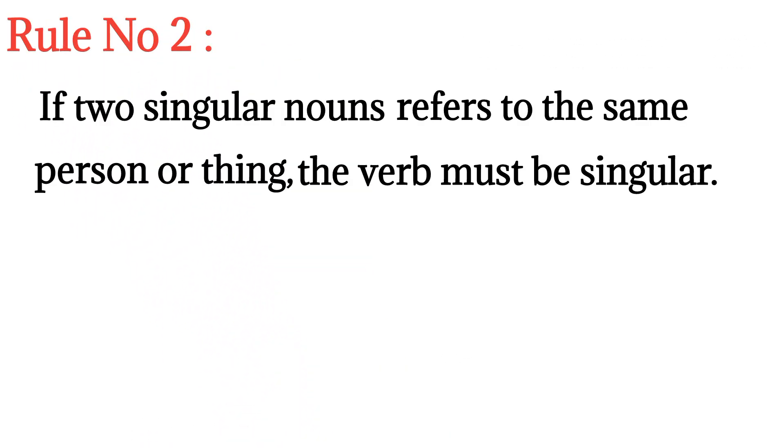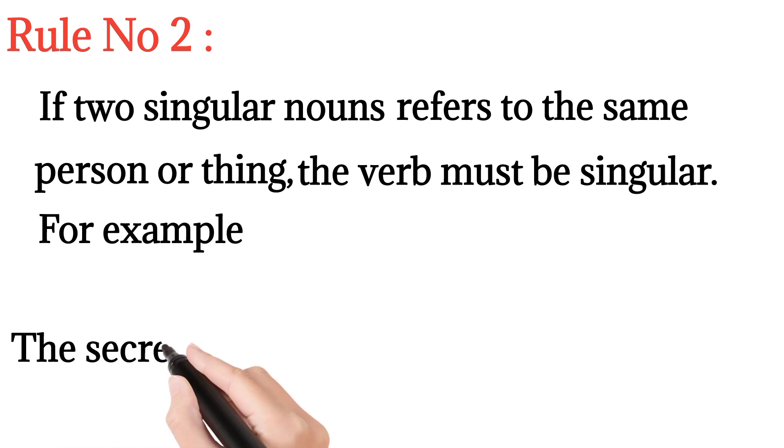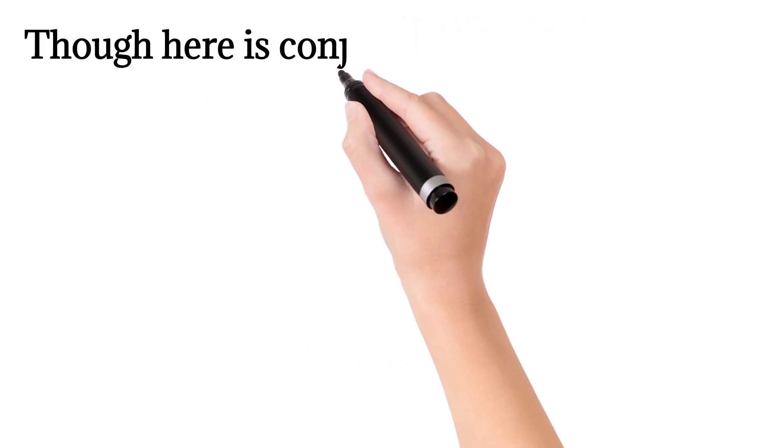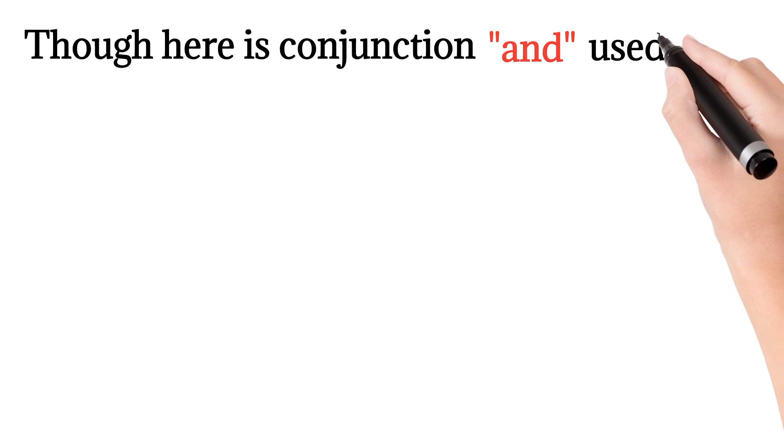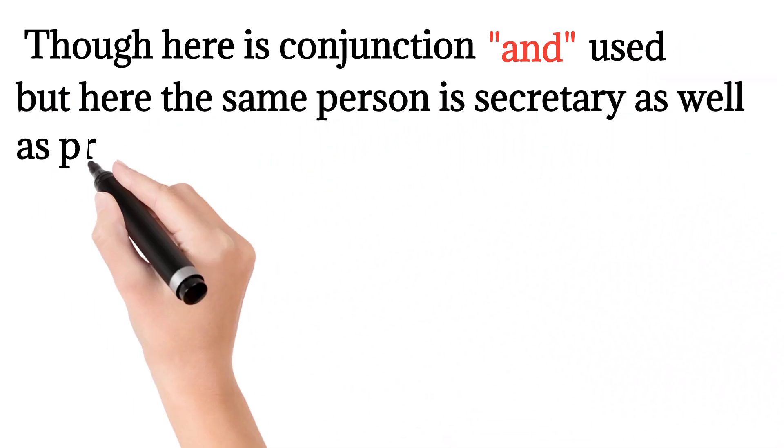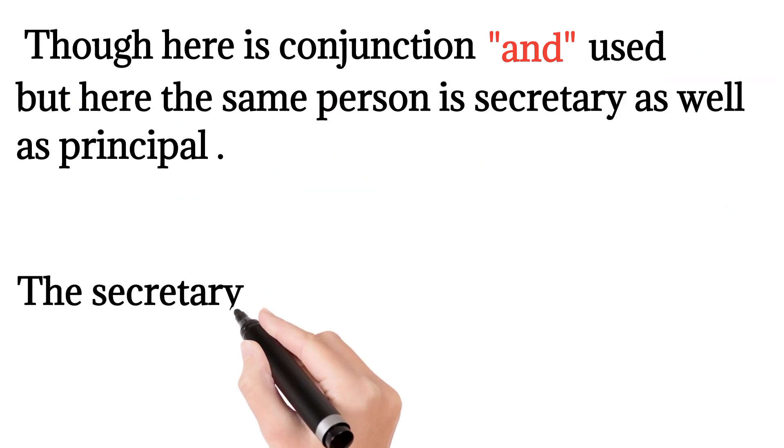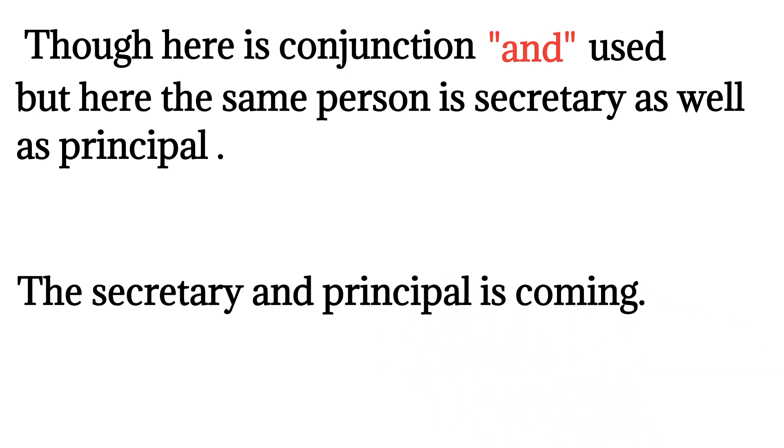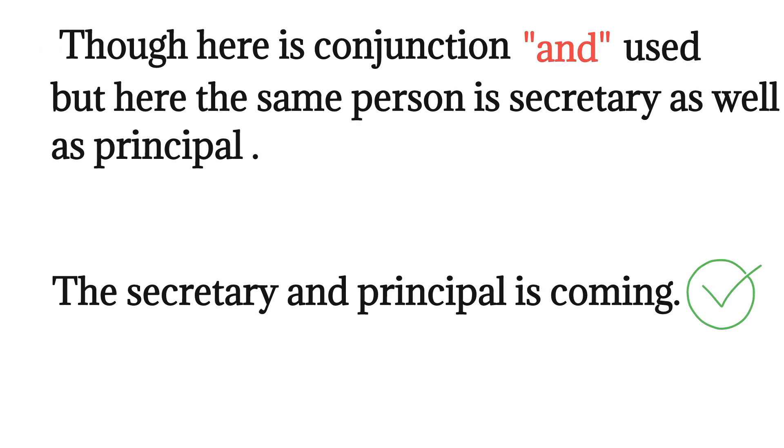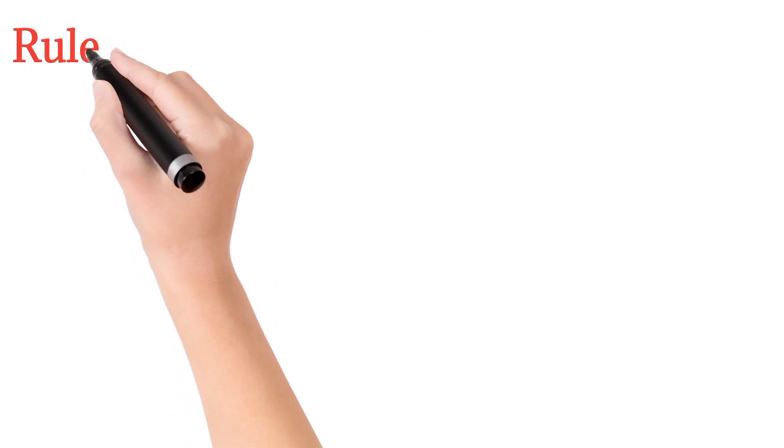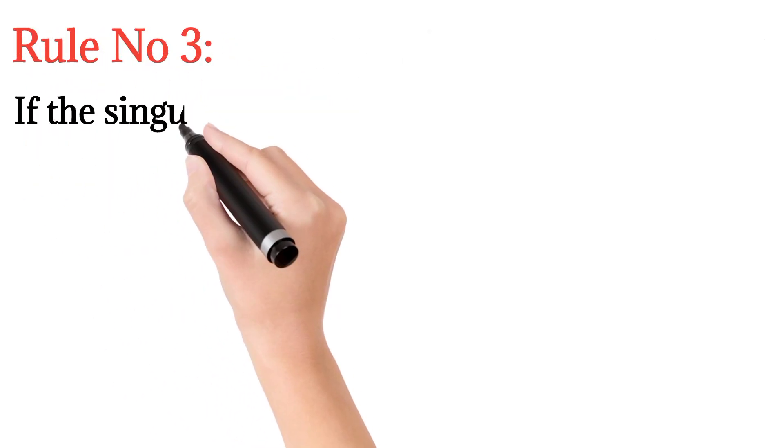Rule number two: If two singular nouns refer to the same person or thing, the verb must be singular. Grammatically, this sentence is also incorrect though the conjunction 'and' is used, but here the same person is secretary as well as principal. The correct form of this sentence is 'The secretary and principal is coming'.